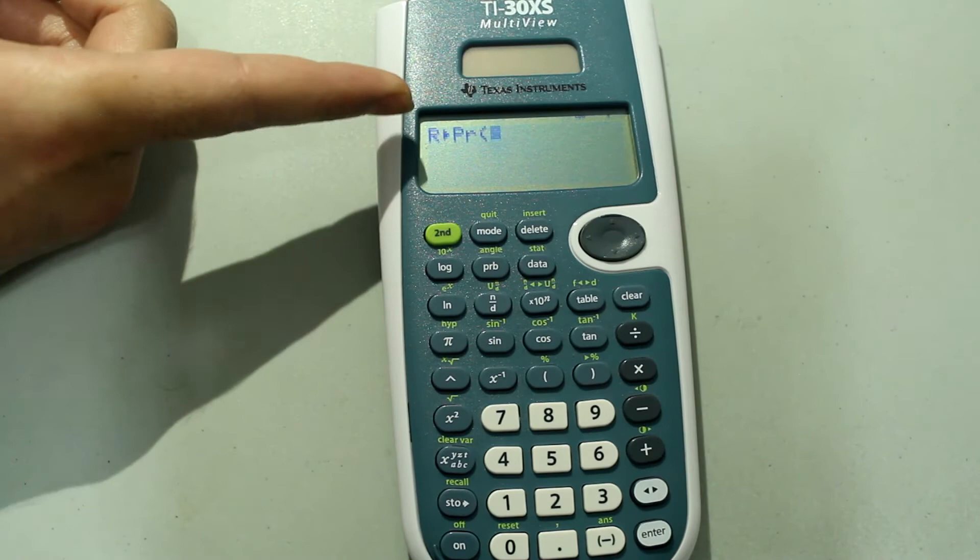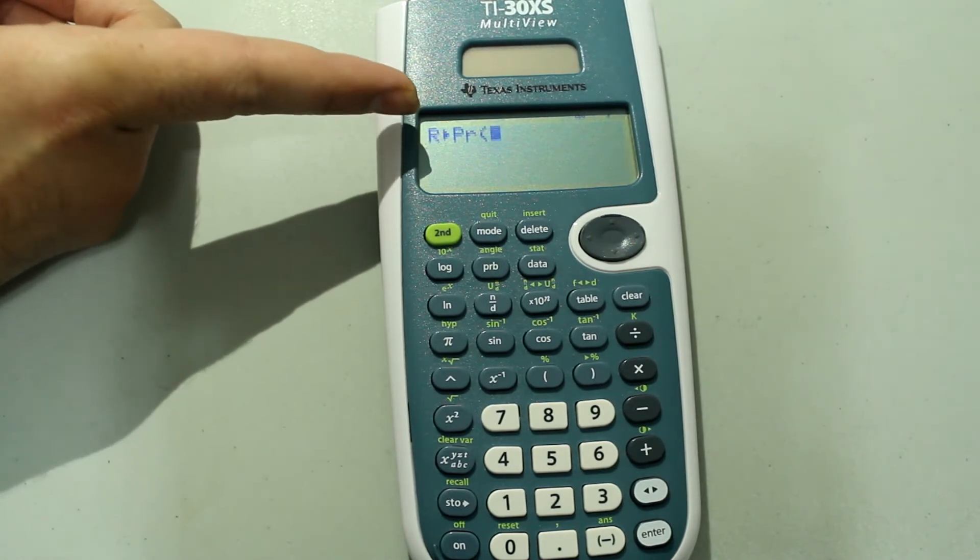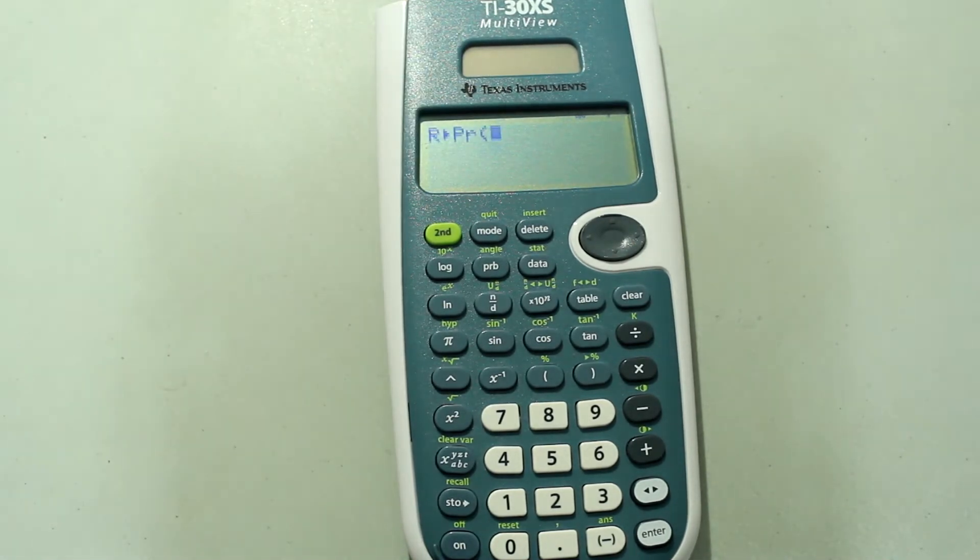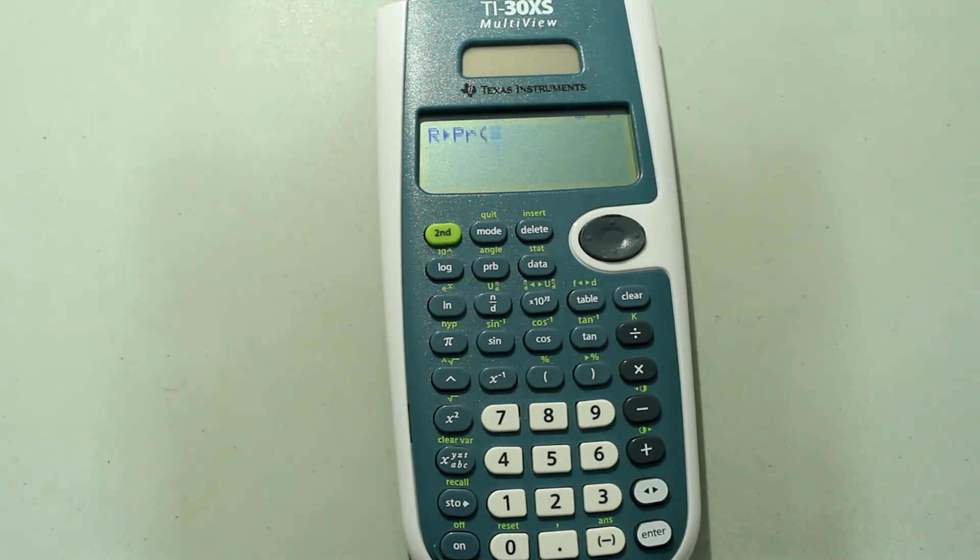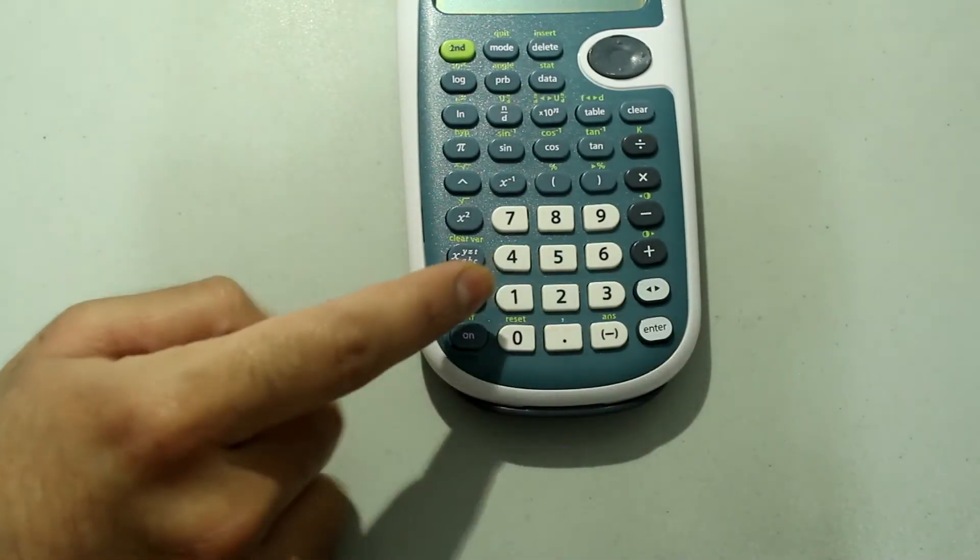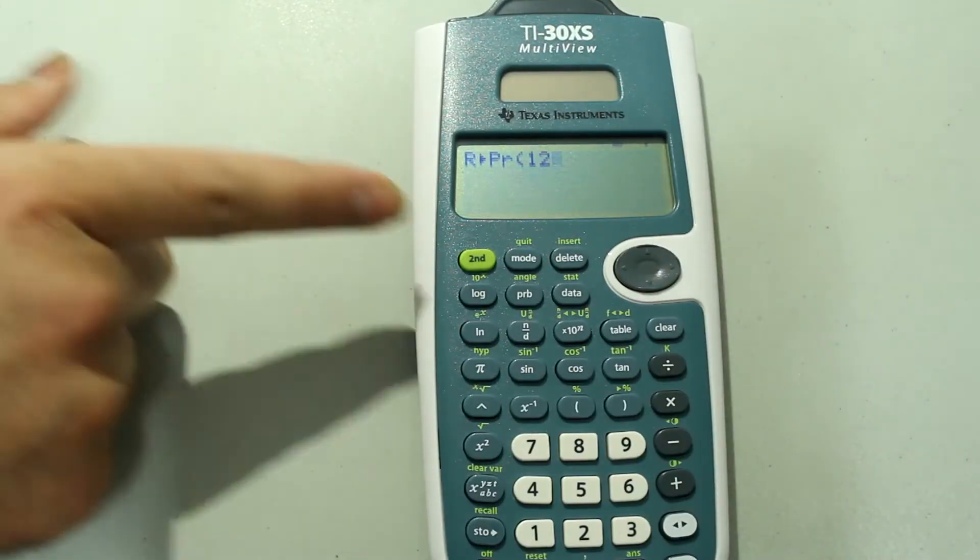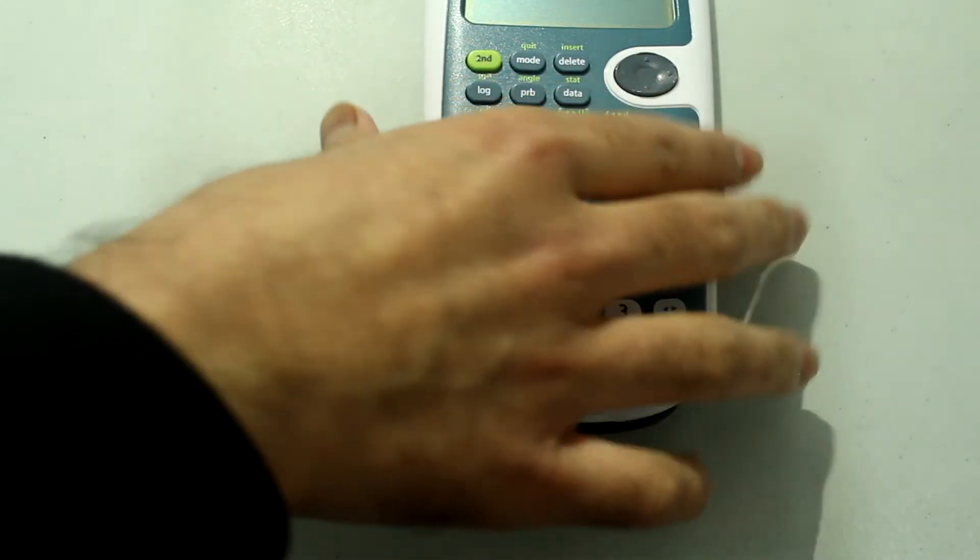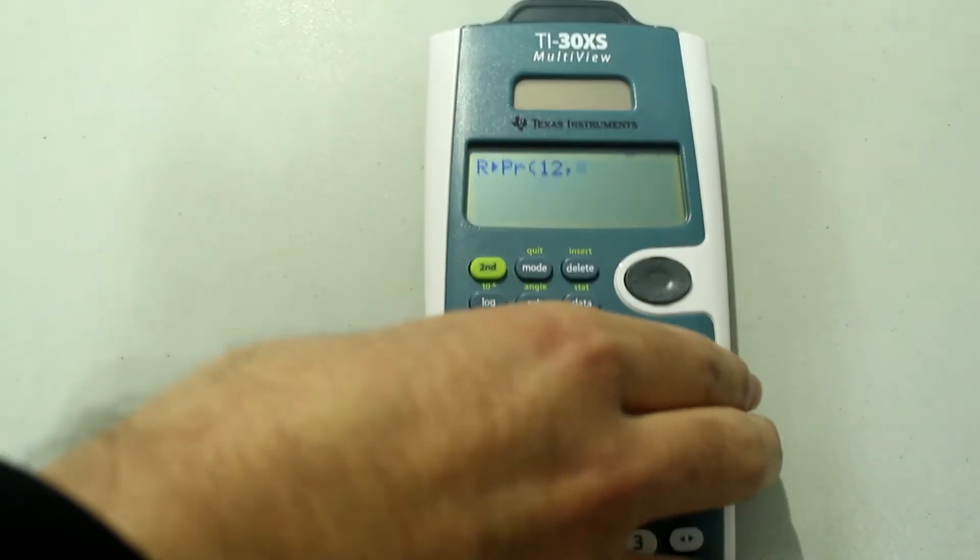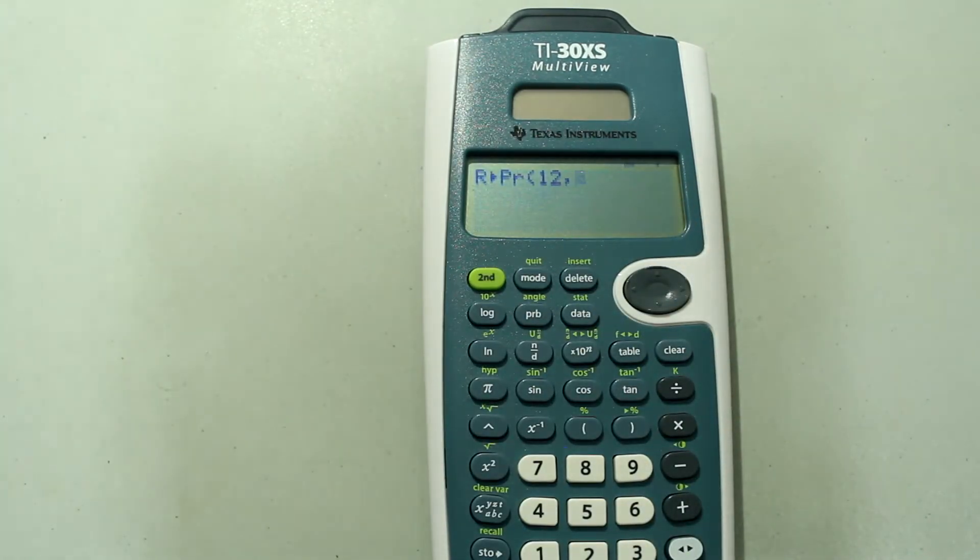So this indicates that it's going to take a rectangular input and then give you out a polar, the radius value for the polar form. So you need to enter it in the order x comma y, so in our case the x value is 12. So you need to type in 12 on the number pad. This is what it looks like so far. Then press second and the decimal button to choose comma.